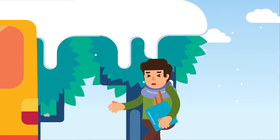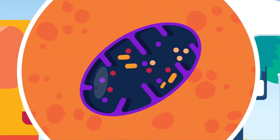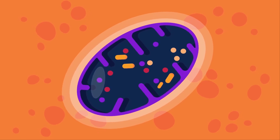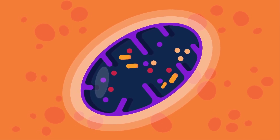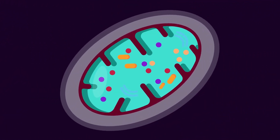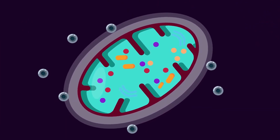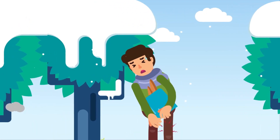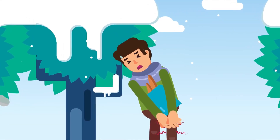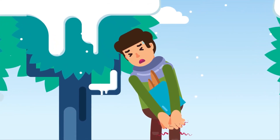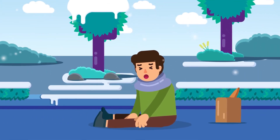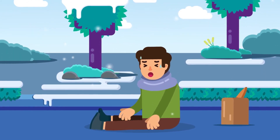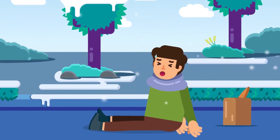In human beings, during strenuous activity, breathing is not able to provide sufficient oxygen for respiration. Muscles experience a shortage of oxygen, so the aerobic process becomes anaerobic. This change causes the formation of lactic acid. Accumulation of lactic acid causes muscular cramps and fatigue as a safety measure to protect the muscle cells. Rapid breathing after the activity helps to repay the oxygen debt by increasing oxygen in the muscles, thus converting the process back to aerobic.